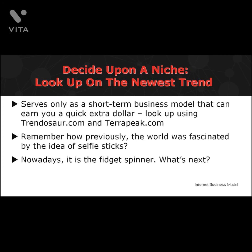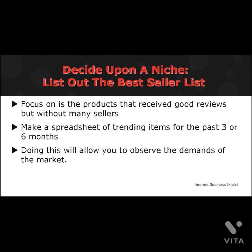There are three ways to decide a niche. First, look up the latest trend — this method serves only as a short-term business model to earn you a quick dollar. The tools you can use are Trendasaur.com and Terapeak.com. For example, those who kept up with the selfie stick trend were earning over $50,000 selling only selfie sticks. Next, look up any e-commerce website like Amazon and eBay and search for its best seller list. Focus on products with good reviews but with little sellers — this gives you fewer competitors and better opportunity to make sales. Make a spreadsheet of trending items in the last three to six months to understand market demands.